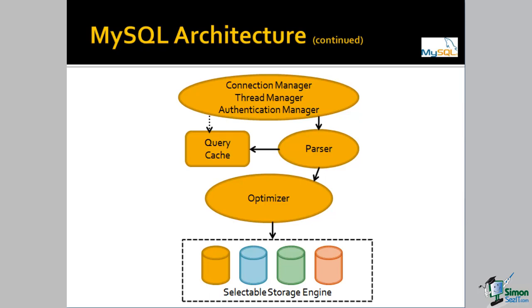The next step after getting a connection to the database server is to parse the query, which is actually a fairly complex process. Logically, the next step is the parser components. Once the query is parsed, we have two possibilities: either the query has already been seen by the MySQL database, in which case it's going to be stored in the cache, or the query is going to be passed to the optimizer so that a query tree — the path of access to the data — can be developed.